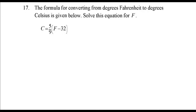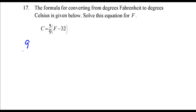The easiest thing to do to solve this equation for f is to first multiply both sides by the reciprocal of five-ninths. The reciprocal of five-ninths is nine divided by five, so I'm going to multiply the left-hand side by nine-fifths and the right-hand side by nine-fifths also.